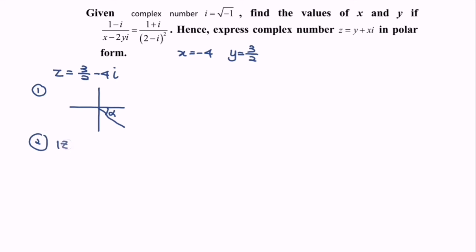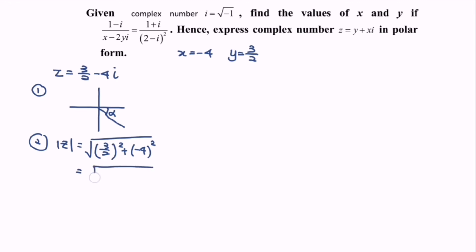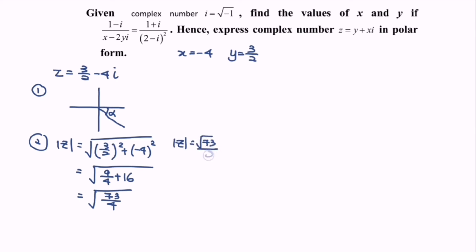Step 2 is to find the modulus of z, where we will have square root of 3 over 2 bracket squared plus negative 4 bracket squared. So 9 over 4 plus 16, giving us 73 over 4. So the modulus of z will be equal to square root of 73 over 2.